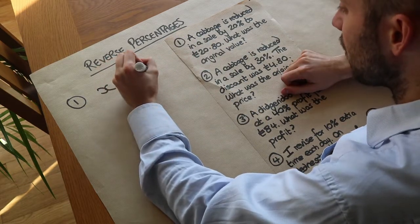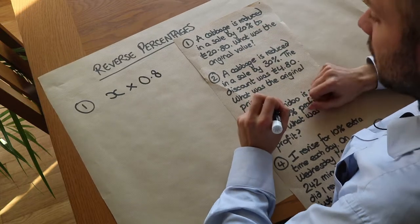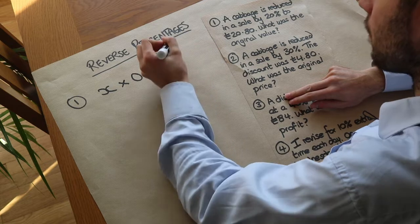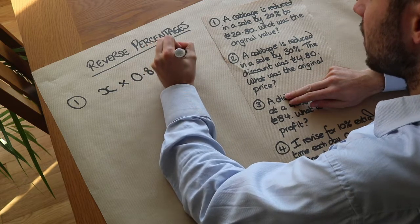Well everything starts 100%, it reduces by 20% to 80%. And 80% as a decimal is 0.8. So we'd multiply by 0.8 in order to reduce it by 20%. We've seen that in previous videos. And that gave us a value of £20.80.